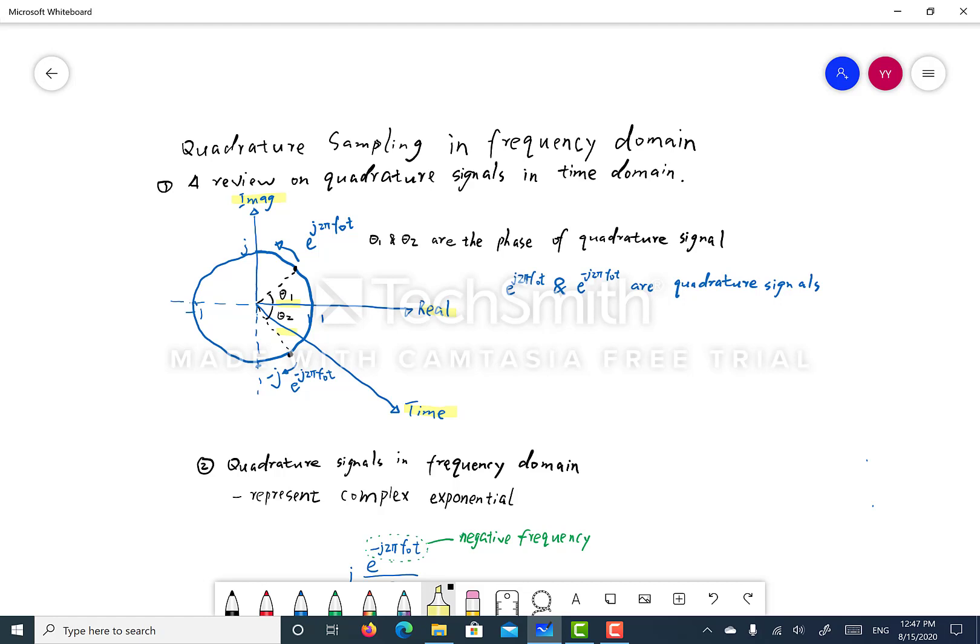And when you increase phi1, the quadrature signal basically rotates in counterclockwise direction that way. And likewise, if you make the phi2 more negative, this quadrature signal will rotate in a clockwise direction.